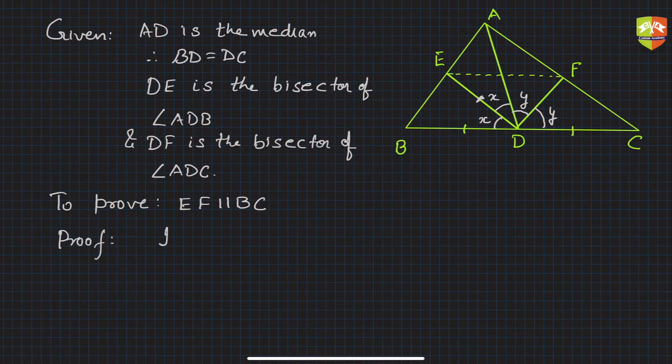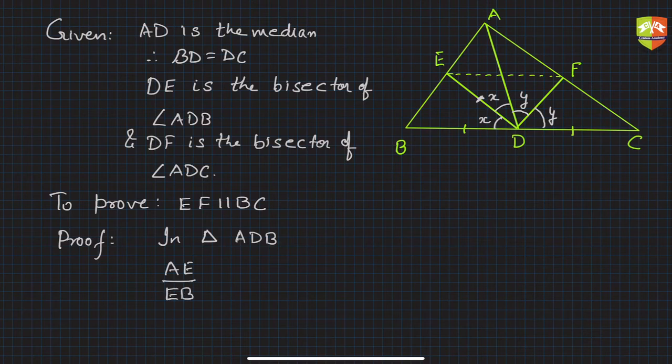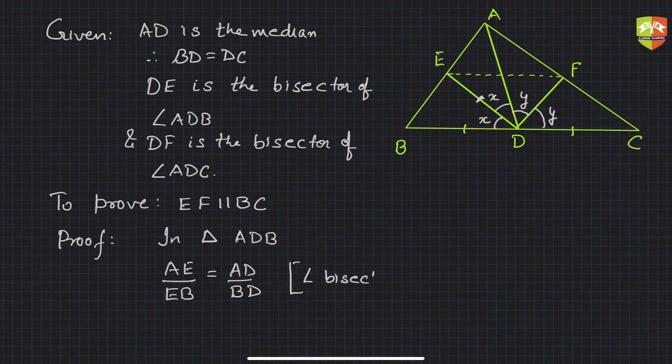In triangle ADB, we can write AE/EB is equal to AD/BD. Why is that? This is because of angle bisector theorem, where DE is the bisector.